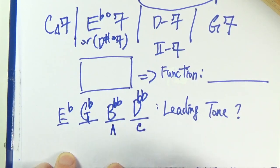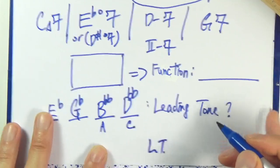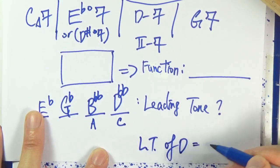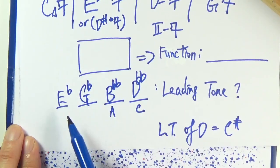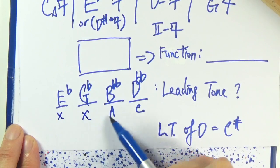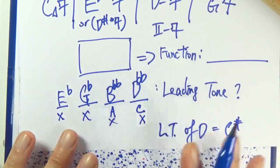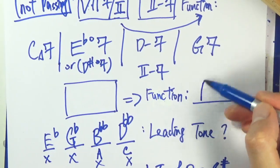So does it contain the leading tone of D minor? So what's the leading tone of D minor? Or D, or just D, and that's C sharp. So you ask yourself, do you have C sharp here? So no, it's a C, no. So you don't have the leading tone. So here we can confirm that this is actually a passing chord.